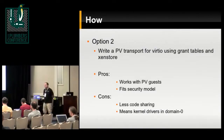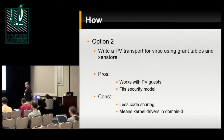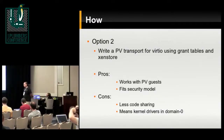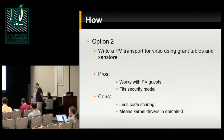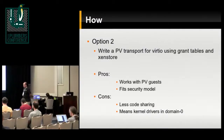Option two is basically what the Google Summer of Code project was: write a PV transport using grant tables and XenStore. The advantage is it works with PV guests and it fits the security model. On the other hand, it means introducing another VirtIO transport. A lot of the difficult code in VirtIO is the transport, so having another transport does eliminate a lot of the code sharing benefits. One of the issues is that our ring implementation uses physical addresses, which you wouldn't want to use here — you'd want to use grant table references. That's potentially a small change to the ring implementation, but nonetheless it's a change.